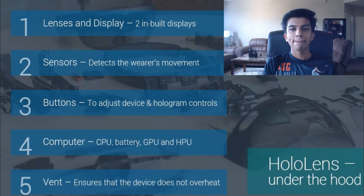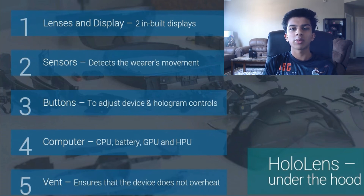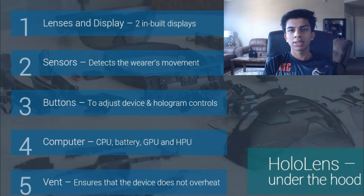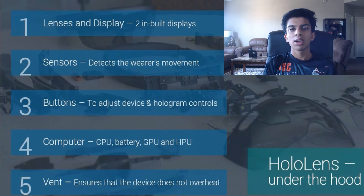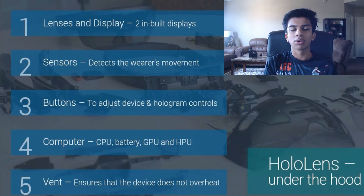Now I'll talk about what HoloLens is made of. It has lenses and a display — two window displays — and it is transparent, so you can look at your surroundings while also looking at the hologram. It has sensors that detect awareness and movement so you can adjust accordingly. It also has two buttons: one for adjusting the volume and the other for controlling and adjusting the contrast of the hologram.